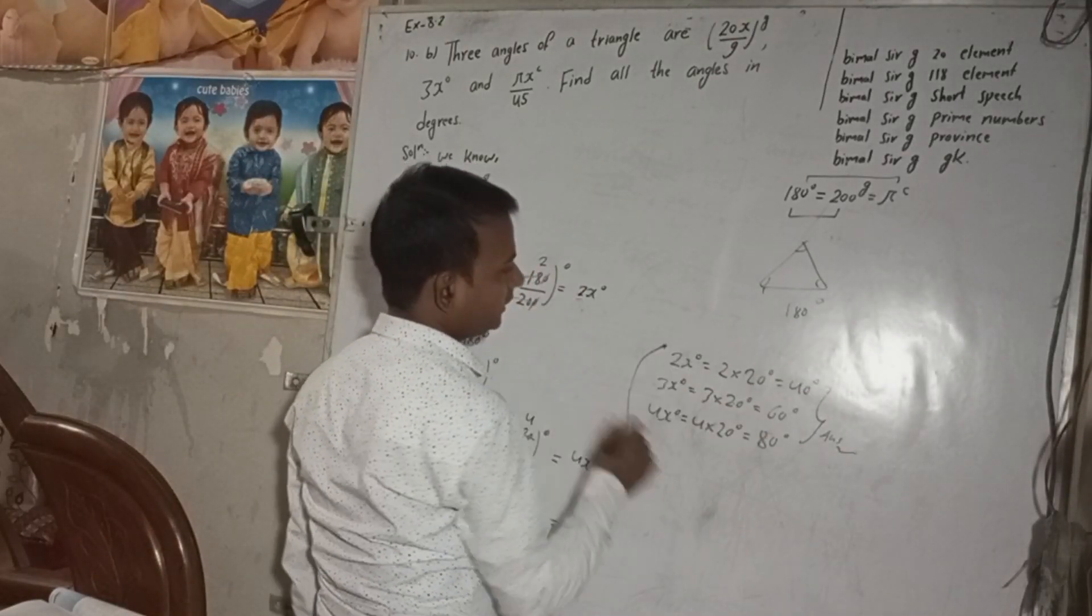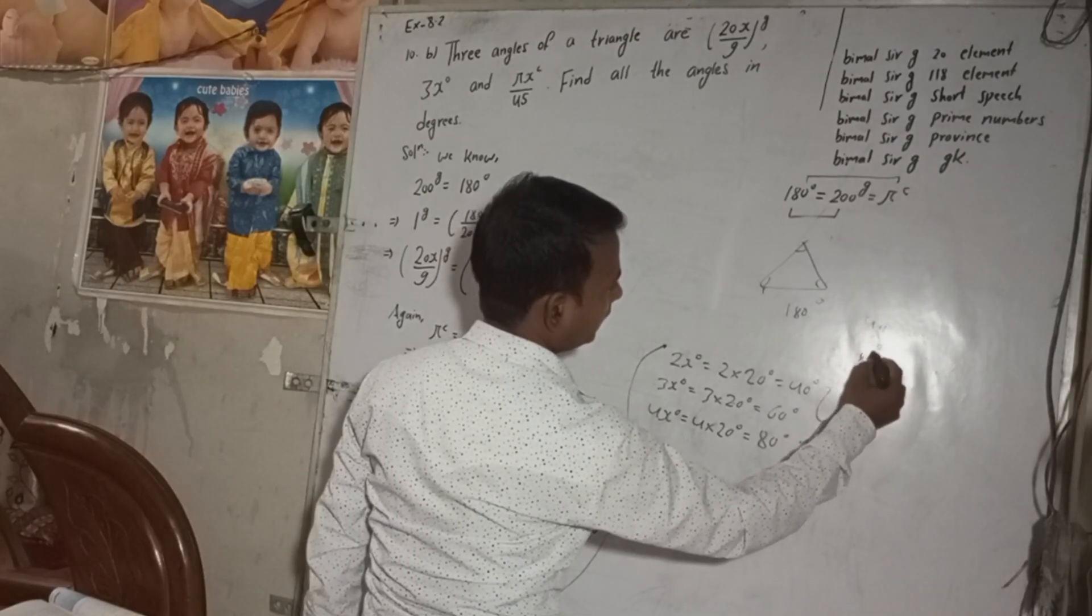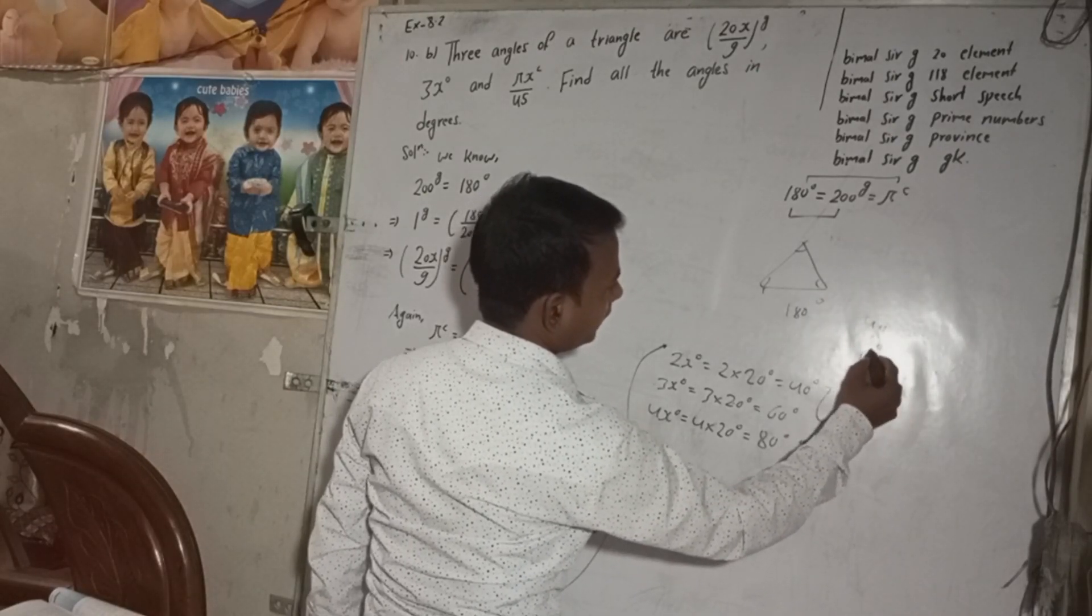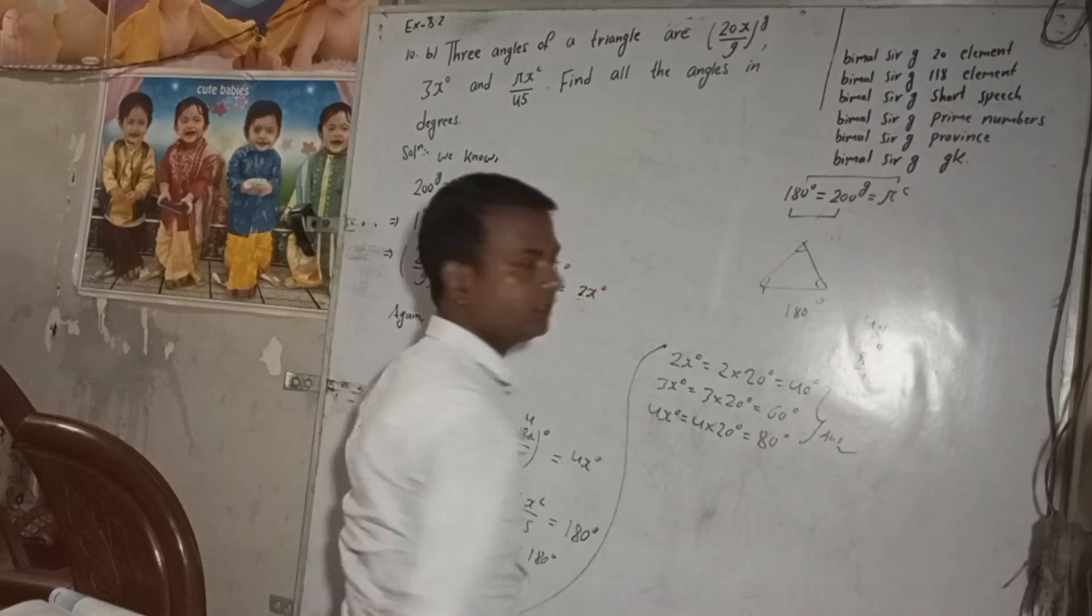Find all the angles in degree, so these all are the angles in degree. If we add all these, we will get here 180 degree. We can check this: 40 plus 60 plus 80, 4 plus 6 is 10 and 8, so 180 degree we get.